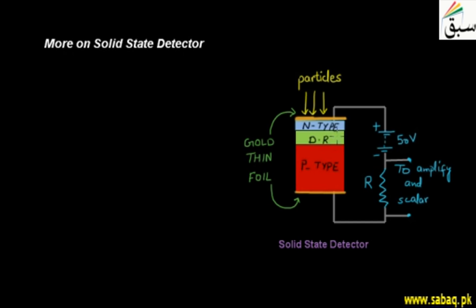When we have particles entering this n-type region, they penetrate the depletion region. As you can see here, the depletion region is denoted as DR.